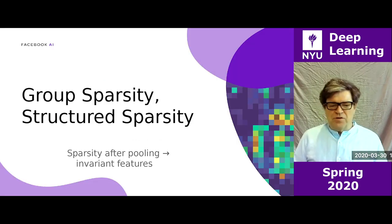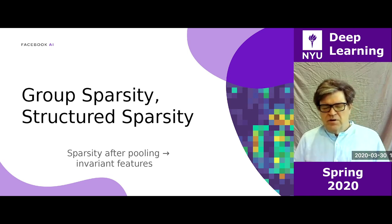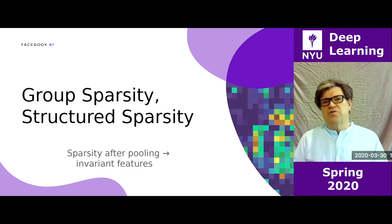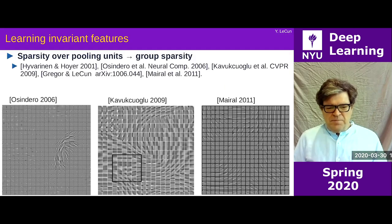Group sparsity and structure sparsity. There's some work going back about 10 years — in fact the first work on this is about 20 years old — on the idea of group sparsity. Here is the idea: train a system to generate sparse features, but not just normal features extracted by convolutions and ReLUs, but to produce sparse features that are sparse after the pooling.